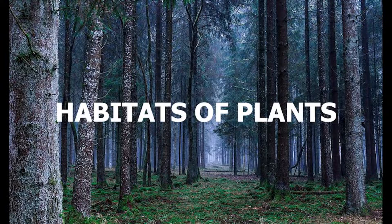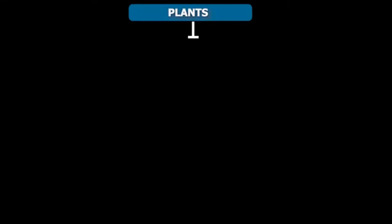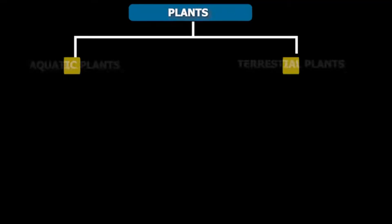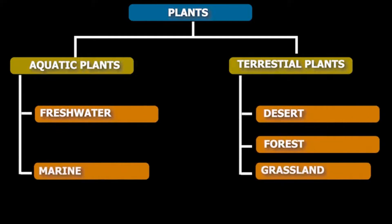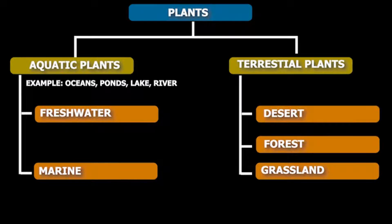Plants can be found both in the water as well as on the land. A habitat covered in water is known as an aquatic habitat. Oceans, ponds, lakes, and rivers are a few examples of aquatic habitats. The water around us has great variety.